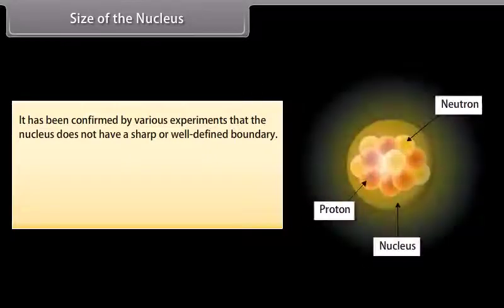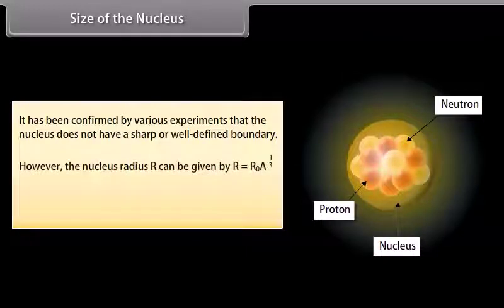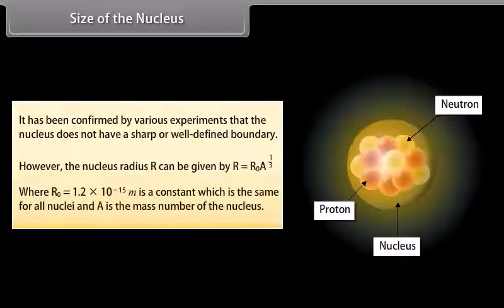Size of the nucleus. It has been confirmed by various experiments that the nucleus does not have a sharp or well-defined boundary. However, the nucleus radius R can be given by R is equal to R0 times cube root of A, where R0 is equal to 1.2 times 10 to the power minus 15 m is a constant which is the same for all nuclei, and A is the mass number of the nucleus.